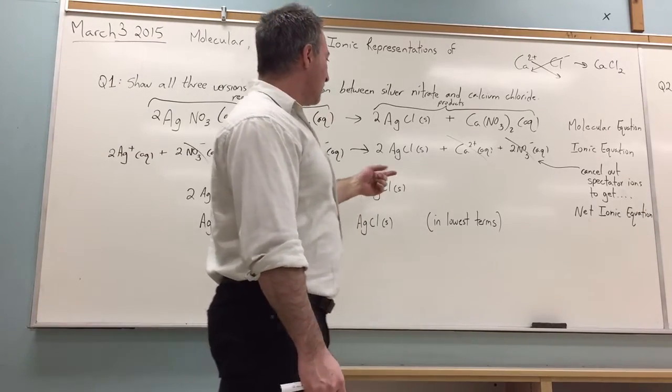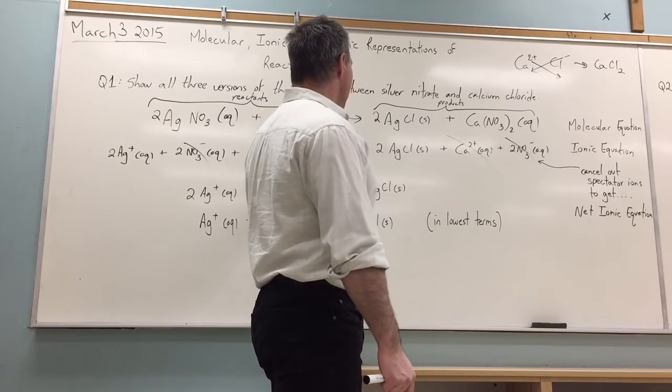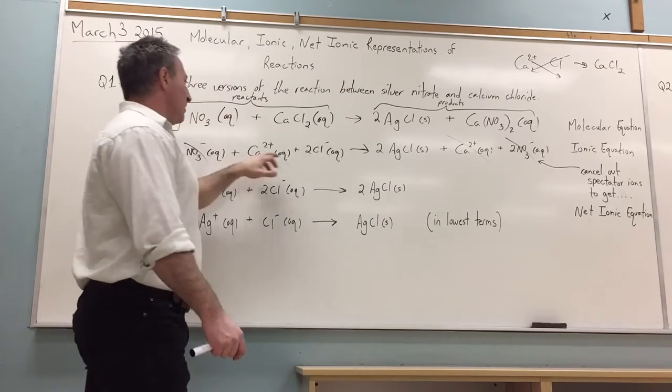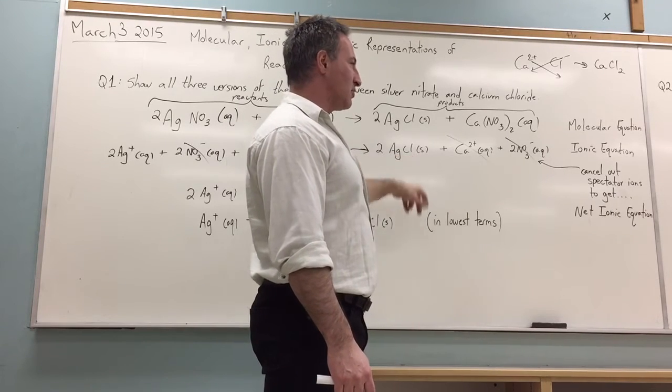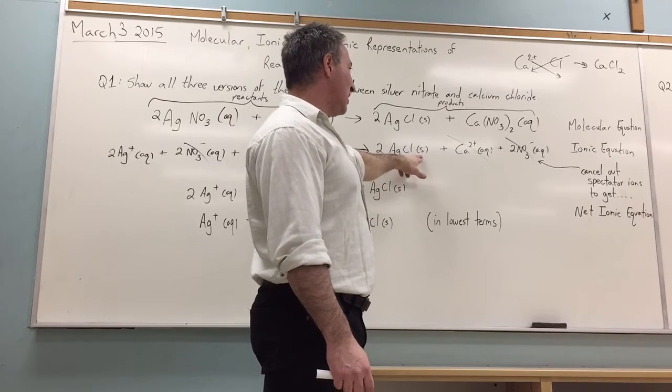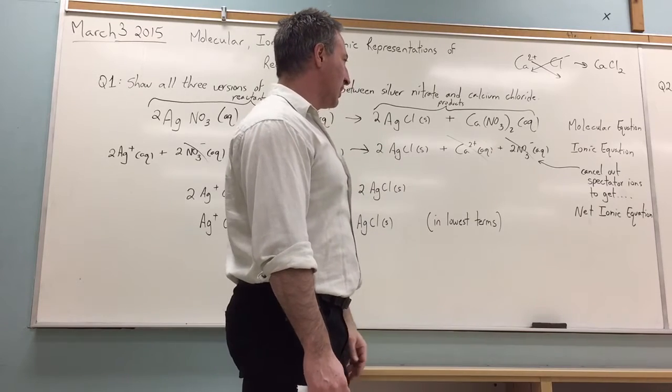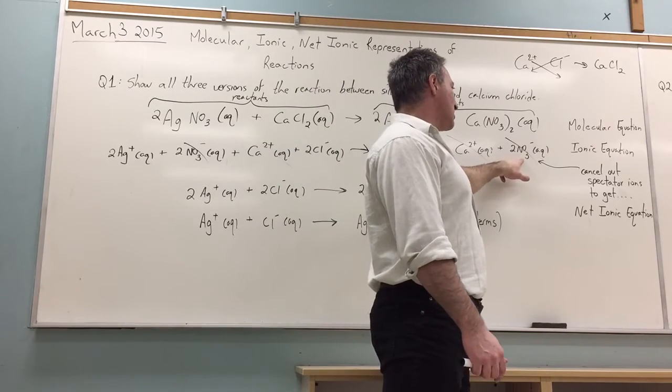After the reaction, the silver and the chloride are more attracted to each other than they are to the water, so they form a precipitate which falls out of solution. So we write S to show that it's a solid, that it's a precipitate. The other two remain in aqueous solution.